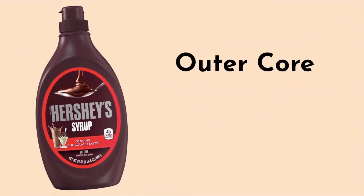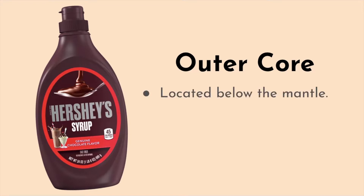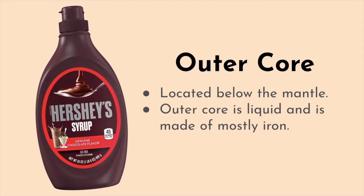The outer core is next, and we represent it with Hershey syrup. It's made up of the same things as the inner core — chocolate is chocolate, and iron and nickel is iron and nickel. The outer core is located below the mantle and above the inner core. It is liquid and made of mostly iron, and it is about 2,250 kilometers thick.